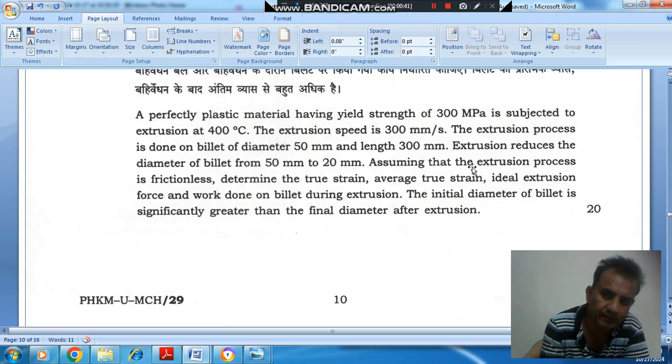Assuming that the extrusion process is frictionless, determine the true strain, average true strain, ideal extrusion force and work done on billet during extrusion. The initial diameter of the billet is significantly greater than the final diameter after extrusion.